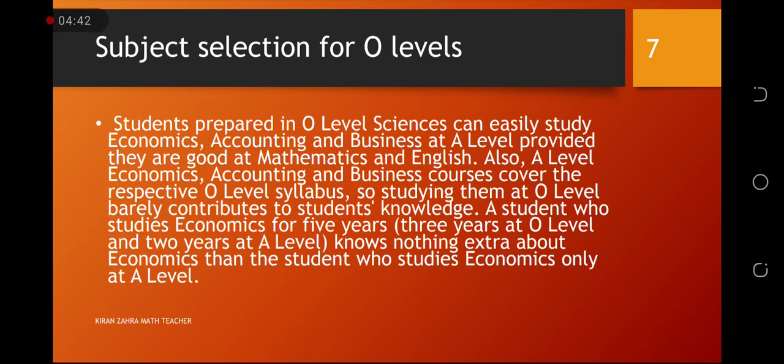Uske reason kiya hai, ki jitne bhi students o levels me sciences me appear hottei hai, wou tamam ke tamam subjects, jaysse economics hai, accounting hai, business hai, kiya sab kuchy A levels me jho hai, wou opt kar sakti hai, agar unki math bhoot achi hai, unki english bhoot achi hai. Iska mtlub hai, kiya agar aap physics, chemistry, biology, ya computer science, ya add math, in subjects jho hai, wou agar select kar lietai hai, toh aap ke liye bhoot zada benefit hai, kiunki aap ke pas siktu multiple knowledge aajega.